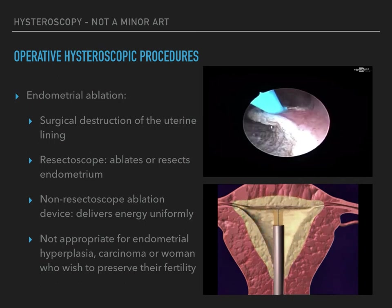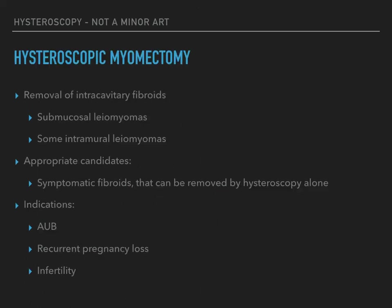Endometrial ablation is not appropriate for women with endometrial hyperplasia or cancer, or those who wish to preserve their fertility. Next, hysteroscopic myomectomy. Hysteroscopic myomectomy is performed to remove intracavitary fibroids — a term that refers to submucosal leiomyomas and some intramural leiomyomas for which most of the fibroid protrudes into the uterine cavity. It is a minimally invasive procedure and the procedure of choice for appropriate candidates. Appropriate candidates are women with symptomatic uterine fibroids that can be removed by hysteroscopy alone and do not require additional surgery. The most common indications are abnormal uterine bleeding, recurrent pregnancy loss, and infertility.